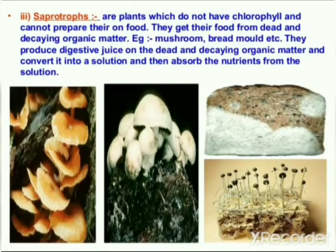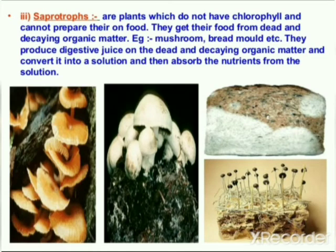Our next category of plants is saprotrophs. These are plants which do not have chlorophyll and cannot prepare their own food. They get their food from dead and decaying organic matter. Examples include mushroom and bread mold. They produce digestive juices on the dead and decaying organic matter, convert it into a solution, and then absorb the nutrients from that solution.